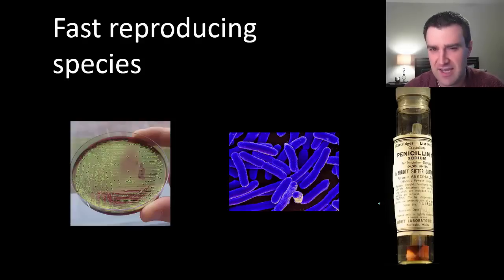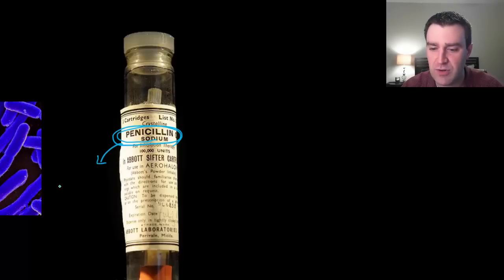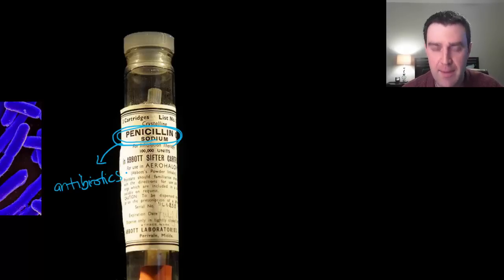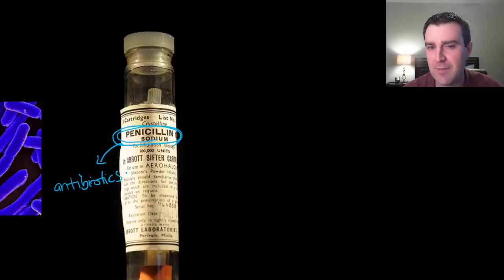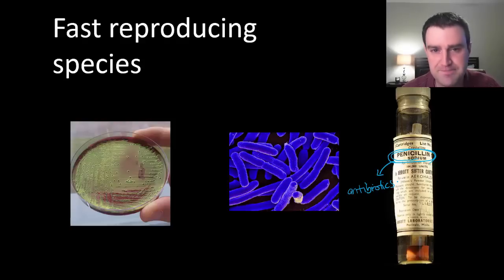Starting in the 1940s, we were finally able to mass-produce chemicals that killed bacterial cells specifically. Penicillin was the very famous first one, and they all belong to a broad class of medicines we call antibiotics — chemicals that destroy bacterial cells specifically. For example, penicillin destroys bacteria by finding a particular component of their cell wall and inhibiting their ability to build their cell wall correctly, which kills them.